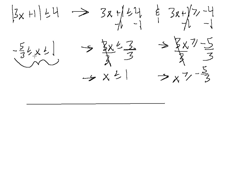Now we want to look at it on a number line, also called a solution graph. We have 0 in the middle, going in the negative and positive directions. We want all the values in between minus 5 thirds and positive 1. We're going to include these two endpoints because we have less than or equal to signs. So we put a bracket opening to the right at minus 5 thirds, and a bracket closing to the left at positive 1, shading in between the brackets. That is our solution interval for this absolute value inequality.